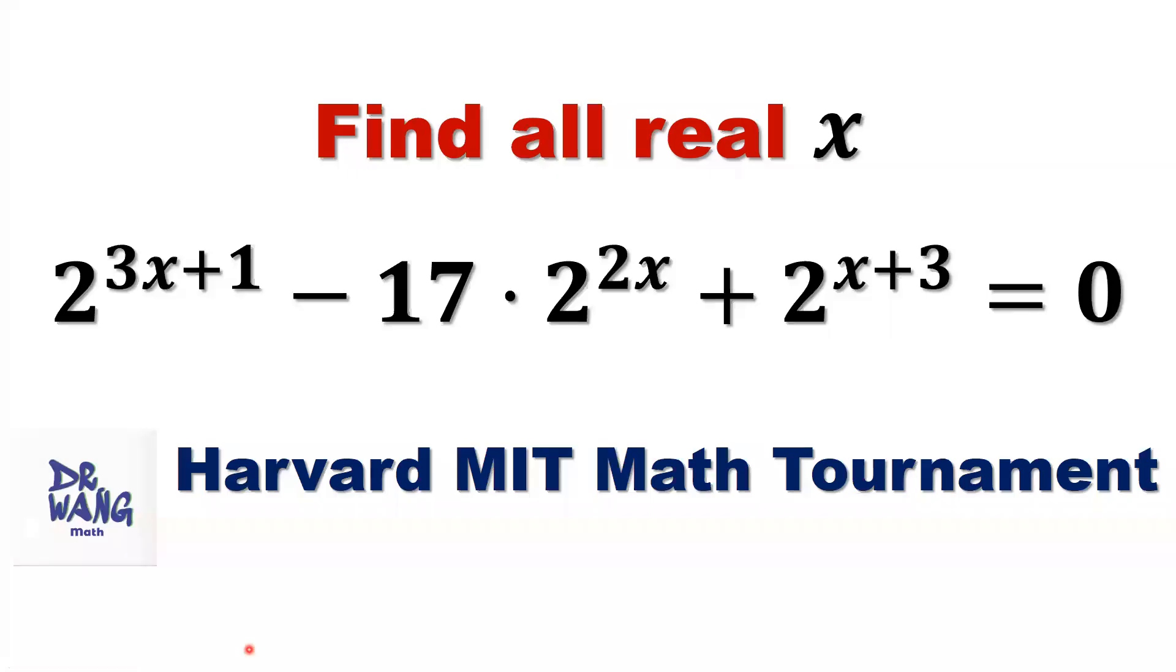Hello everyone, I'm Dr. Nguyen. Here is the question. Find all real x values such that 2 to the power of 3x plus 1 minus 17 times 2 to the power of 2x plus 2 to the power of x plus 3 equals 0.